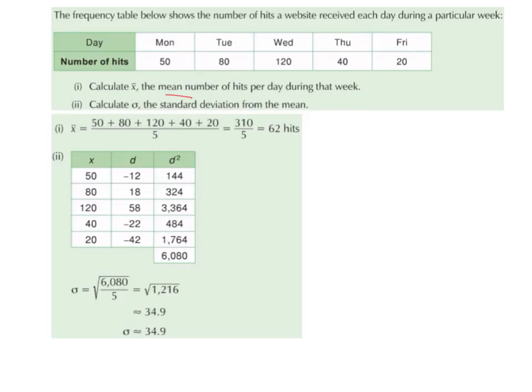So to get the mean, we're going to add them together, 50 plus 80 plus 120 plus 40 plus 20, and divide by the amount. There is 5 values, so we're going to divide by 5. So 50 plus 80 plus 120 plus 40 plus 20 is 310, divided by 5 is 62.